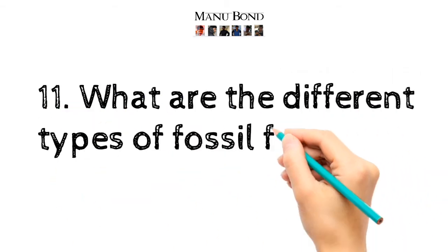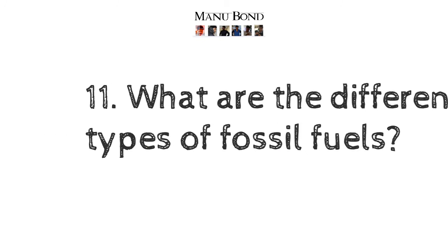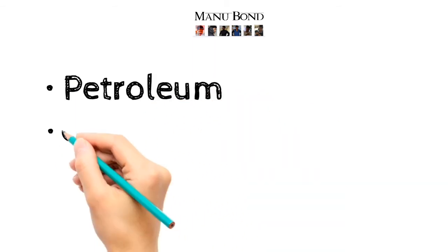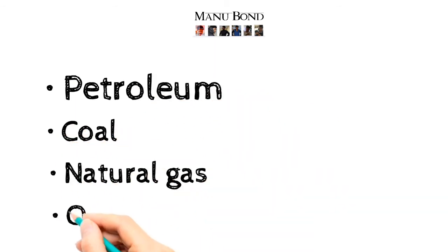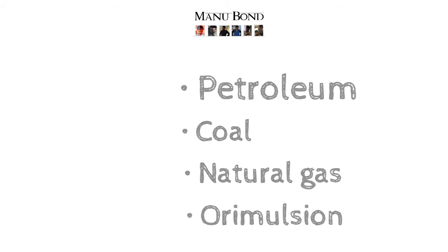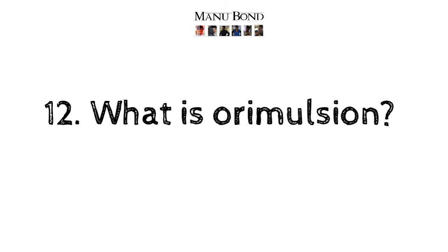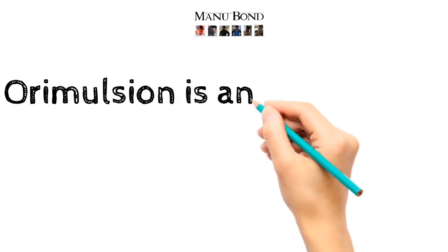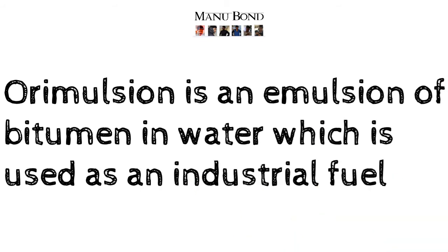Question number 11: What are the different types of fossil fuels? Answer: One type is emulsion, which is an emulsion of bitumen in water used as an industrial fuel.